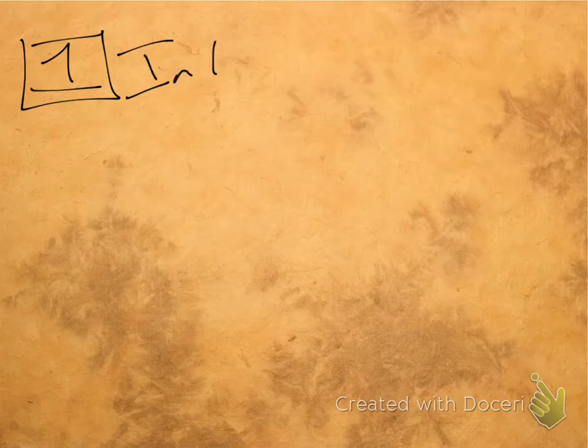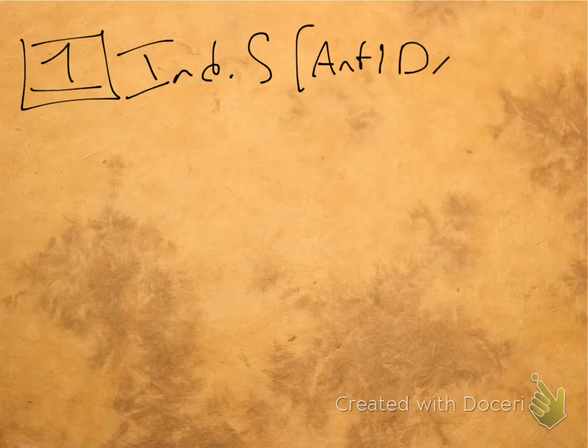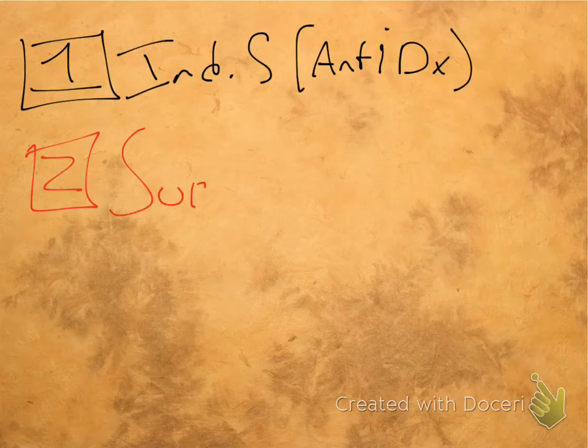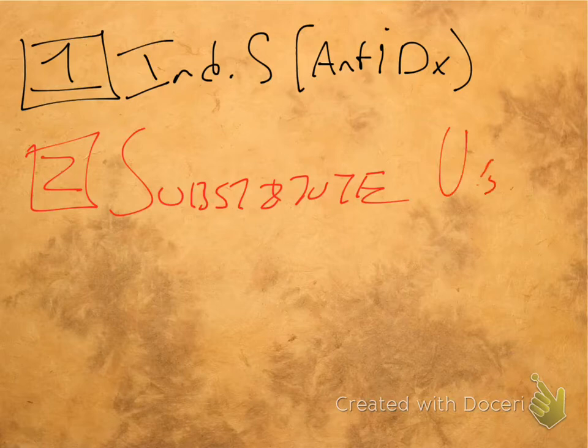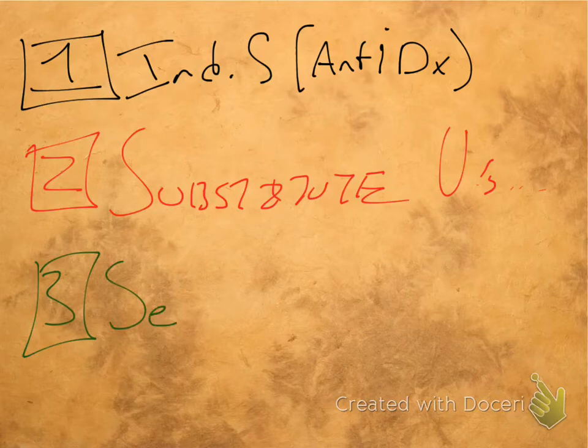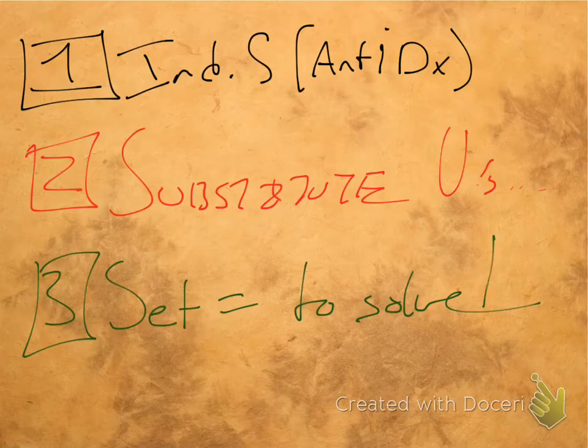So let's go ahead and look at the steps that we need to take. So the first step, and we'll refer back to this page, the first step to do this is to go ahead and take your indefinite integral, or another way to say this is just take your antiderivative. And our second step here is going to be substitute values in. And then our third step is going to be setting equal to solve. And we'll talk about the specifics of all of these in a second.